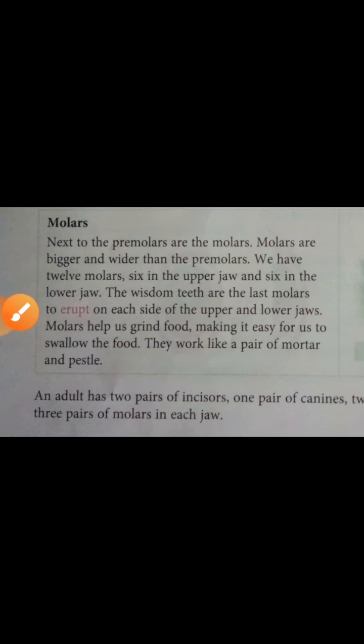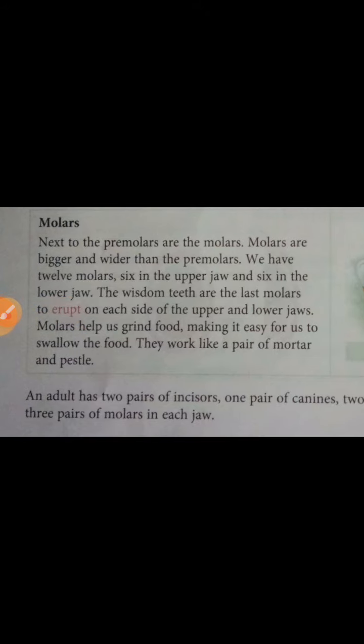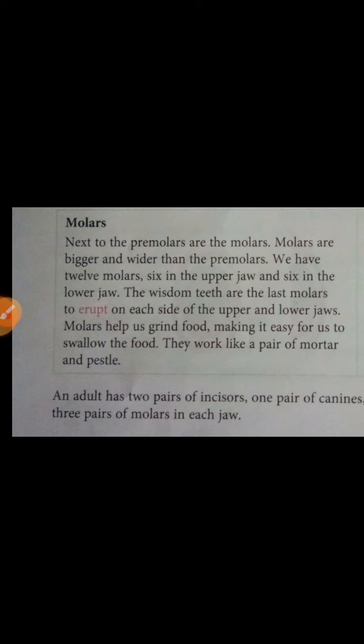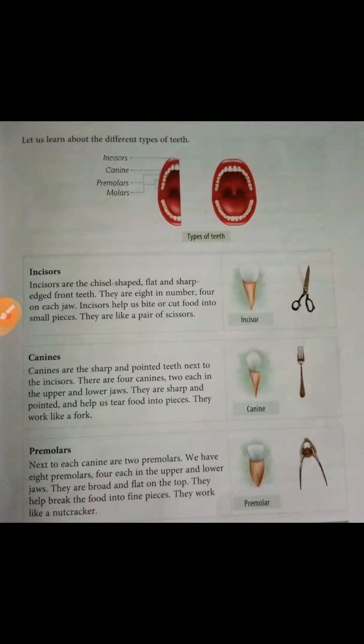An adult has two pairs of incisors, one pair of canines, two pairs of premolars, and three pairs of molars in each jaw. So total molars in the body are 12. These are the four types of teeth: incisors, canines, premolars, and molars.